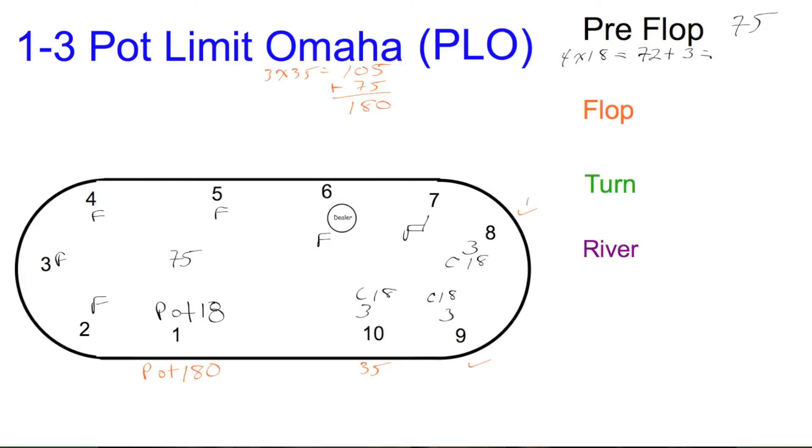Action coming around to seat 8, they fold. Seat 9 folds. Seat 10 is going to call 180. So what's in the pot? 360, that would be 180 times 2, two players for 180. 360 plus what's already in the pot, 75. 360 plus 75 is 435. So we have a good pot of $435.